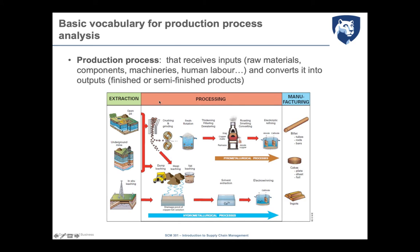The basis of the production system is the production process, which is a series of activities that realizes the final product. We have different types of extraction activities, then processing activities, and according to the type of transformation process realized, we can manufacture tubes, rods and bars, plate or foil sheets, or ingots of steel, gold, silver, or whatever material we are discussing.